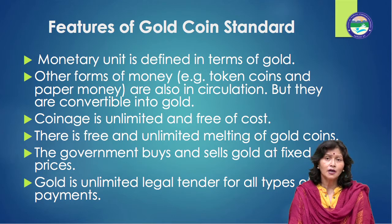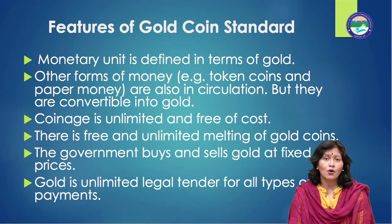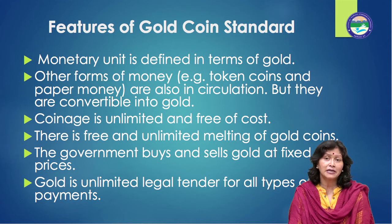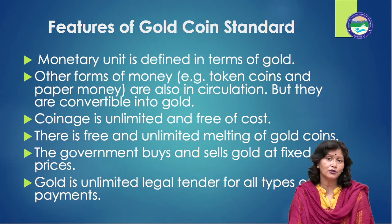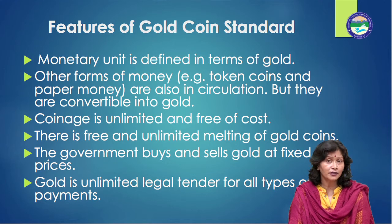Number two, other forms of money — for example, token coins and paper money — are also in circulation, but they are convertible into gold. Number three, coinage is unlimited and free of cost. Number four, there is free and unlimited melting of gold coins. Number five, the government buys and sells gold at fixed prices and thereby maintains parity between the face value and intrinsic value of the standard coin. Number six, there is free import and export of gold. Number seven, gold is unlimited legal tender for all types of payments. All values are expressed in terms of gold.